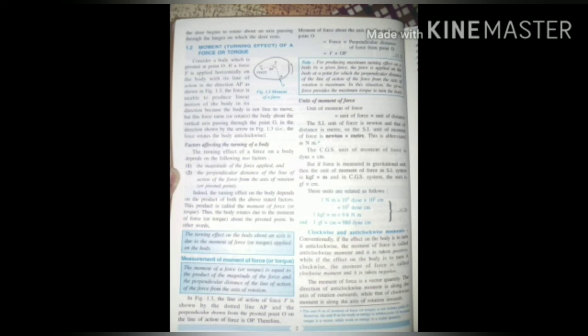This relation is also important. You may be asked to derive the relation between the SI unit and CGS unit of moment of force - Newton meter and dyne centimeter. One Newton equals 10^5 dyne, and one meter equals 10^2 centimeter, so one Newton meter equals 10^7 dyne centimeter. Two more relations to memorize: one kilogram-force meter equals 9.8 Newton meter, and one gram-force centimeter equals 980 dyne centimeter. Okay children, thank you.